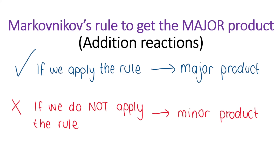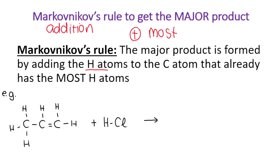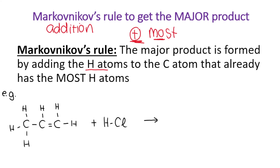What does Markovnikov's rule say? Markovnikov's rule says the major product is formed by adding the hydrogen atom — remember we're doing addition, so Markovnikov is always for addition — by adding the hydrogen atom to the carbon atom that already has the most hydrogen atoms. How I remember this: we are adding to the most. Both 'adding' and 'most' make you think big, a lot. So I add to the one that already has the most. If I had to say we are doing the addition of hydrogen chloride to prop-1-ene, where would I put the hydrogen?